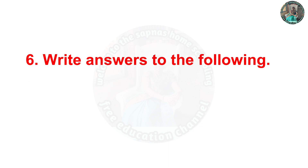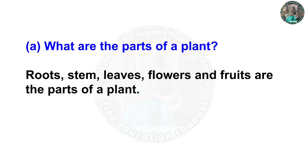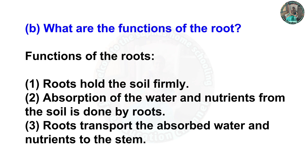Question 6. A — what are the parts of plants? Roots, stem, leaves, flowers, and fruits are the parts of a plant. B — what are the functions of the root? First: the roots hold the soil firmly. Second: absorption of water and nutrients from the soil is done by roots. Third: roots transport the absorbed water and nutrients to the stem.